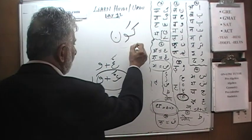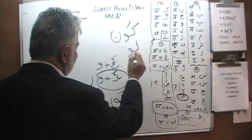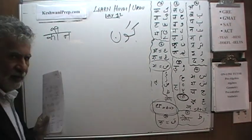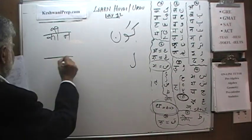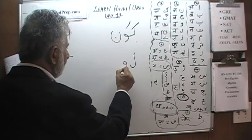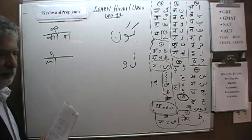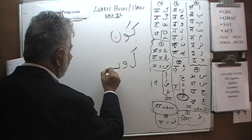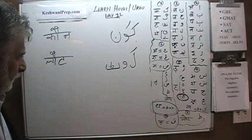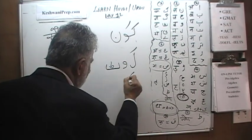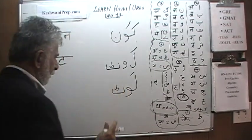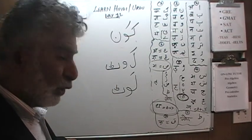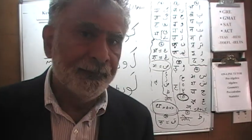Let's do one last one. A Laam — La — joining the Vav, so we need an Oki Matra. It turns out it's Badi Oki Matra, so we need a Zabar too. Then Te — Loot. Loot means to come back: Loot jayen — come back; Loot ke aana — come back please.